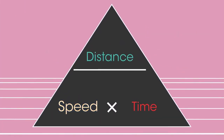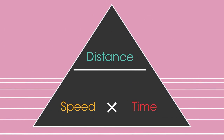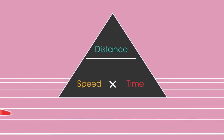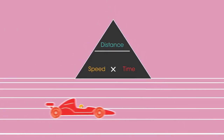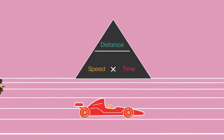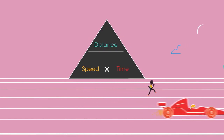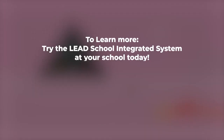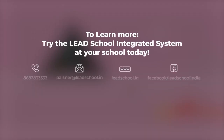So now you can calculate speed, distance and time, and understand a little about the units of speed. And of course, you have proved that a Formula 1 car is faster than even the fastest person on the planet.